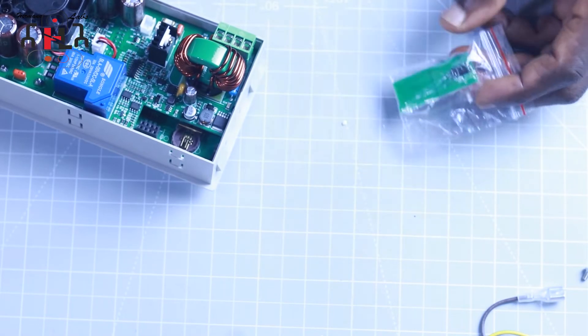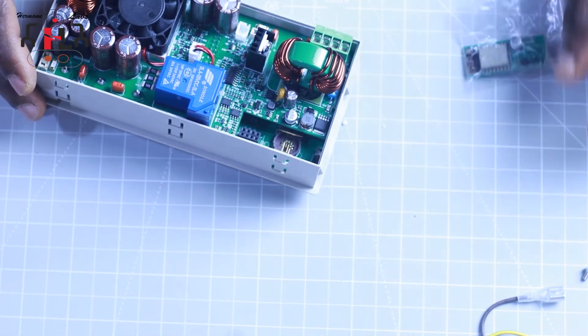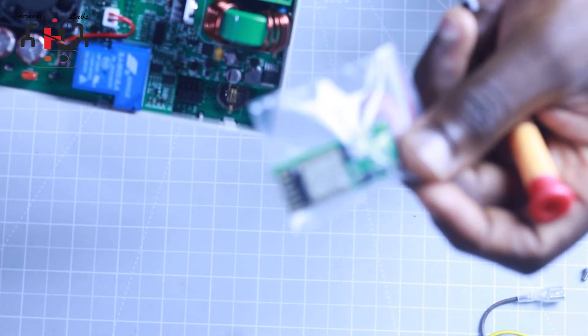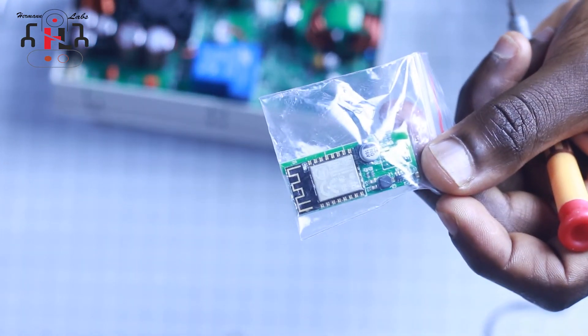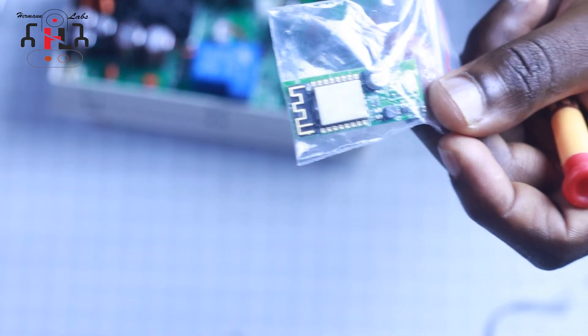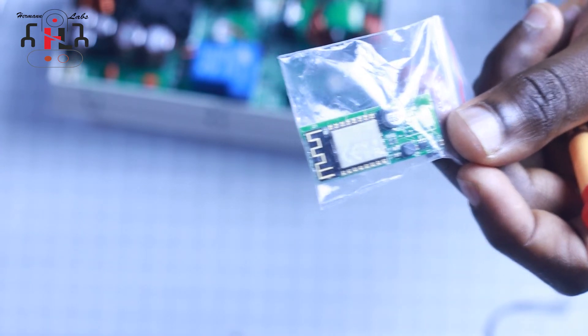This digital controller comes with many cool features. And some of these features are optional. For example, you can order the module without the Wi-Fi components. In my case, I ordered with Wi-Fi module to enable me to control the power supply with my phone or PC via Wi-Fi. Okay, let's plug in the Wi-Fi module.